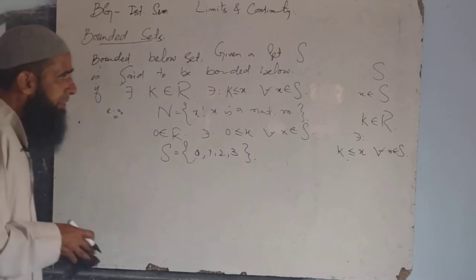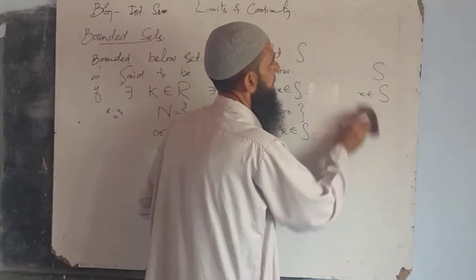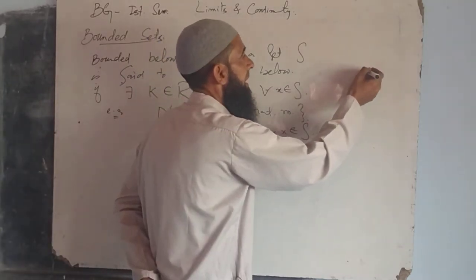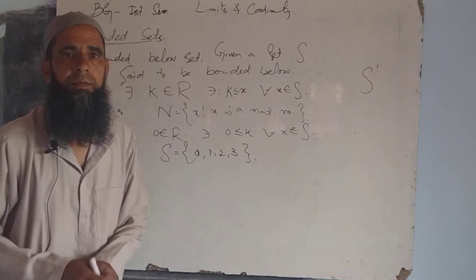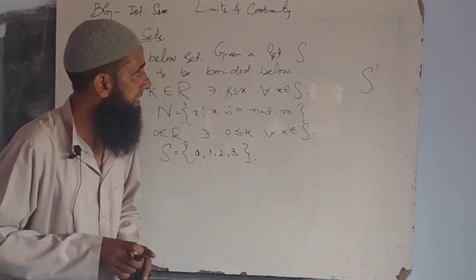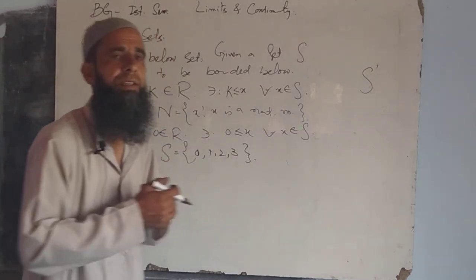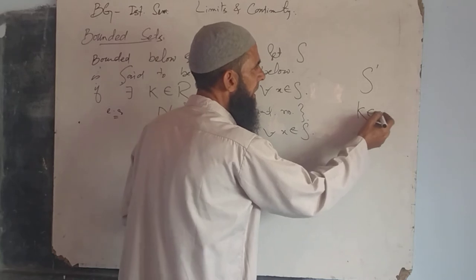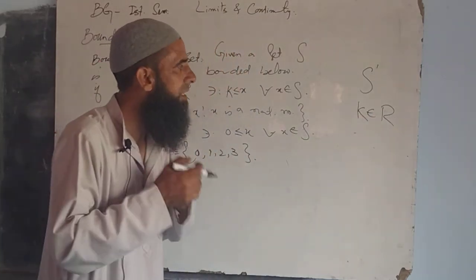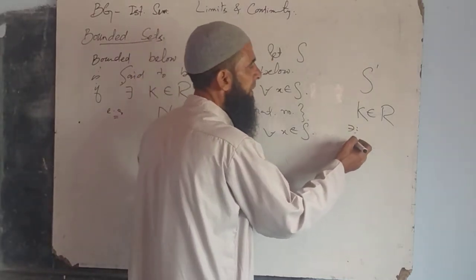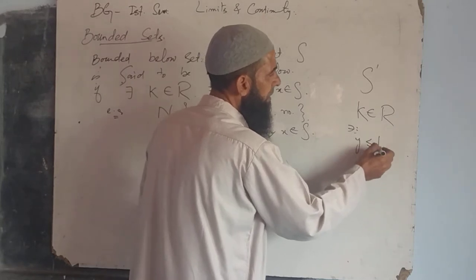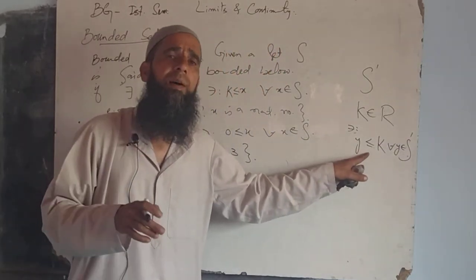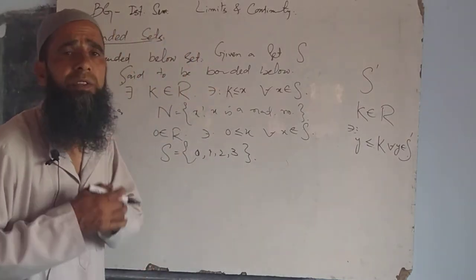The next important definition is bounded above set. Taking a set S'. This set S' is said to be bounded above if, similar to the previous definition, there exists K in R such that Y is less or equal to K for all Y belonging to S'. If this condition is satisfied, we say it is a bounded above set.